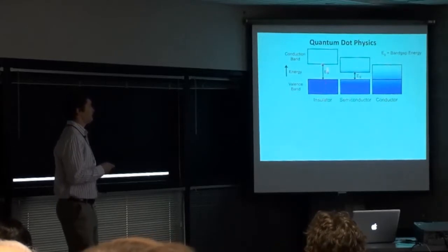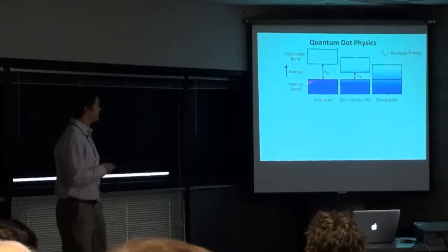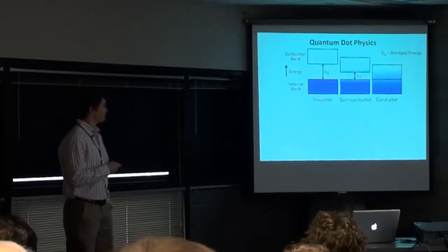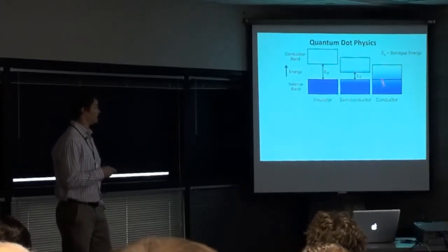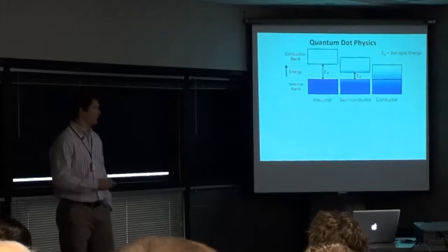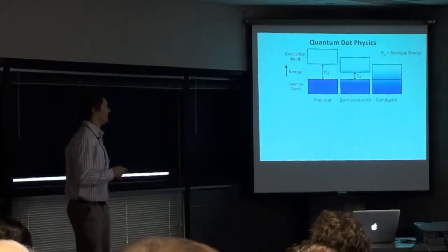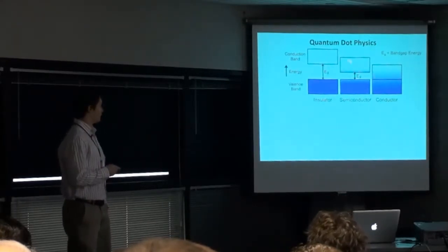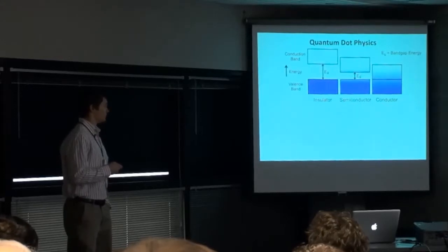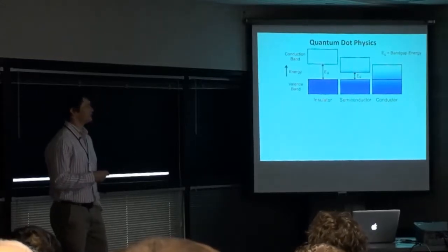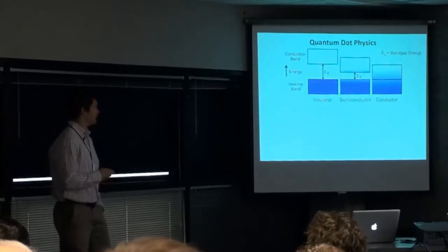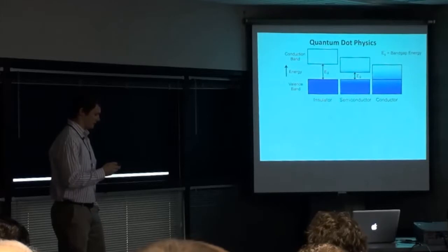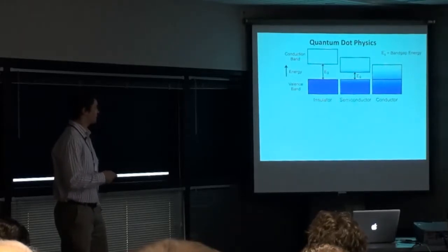In an insulator, the energy difference between the valence band — the HOMO level — and the conduction band — the LUMO level — is very large. In a conductor, they basically overlap, meaning electrons are free to mobilize in an electric field. In an insulator, this does not happen at room temperature. In semiconductors, the energy gap is at an intermediate level where you can tune the capacity for conduction and also tune their optical properties.